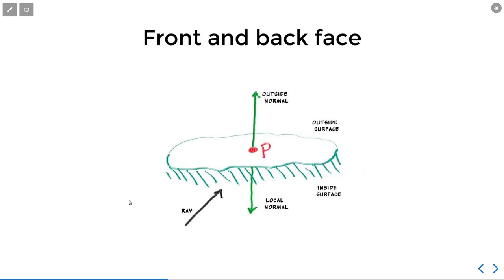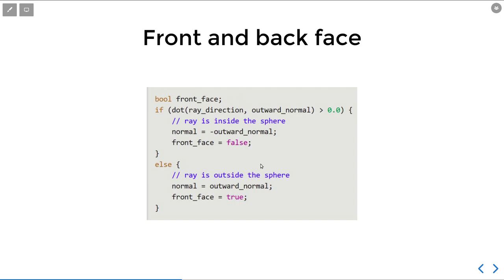One thing we haven't addressed yet is our normal vector always points outward. However, if we have a ray shooting inside the sphere, then it will intersect with the sphere on the inner side. In that case we should have a normal that points inward to the sphere. So we can use a dot product of the ray direction and the outward normal we calculated before to check. If the dot product is positive, then we know the ray is inside the sphere.